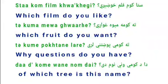Let's consider some examples. 'Sta Kum Filam Kwahigi' — 'Sta' means your, and in Pashto, to like something uses the genitive or possessive case. 'Kum Filam' means which film, and 'Filam' is male singular in Pashto. 'Kwahigi' means like. So the sentence means 'Which film do you like?' The next example: 'Ta Kuma Mewa Kwahigi' — meaning 'Which fruit do you want?' 'Ta' means you, 'Kuma Mewa' means which fruit, and 'Mewa' is female singular — that's why we use 'Kuma'. 'Kwahigi' here means want.